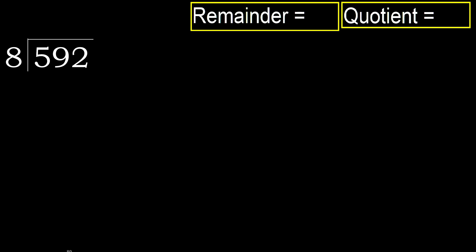592 divided by 8. 5 is less, therefore next. 59 is not less, therefore work with 59 and 8.